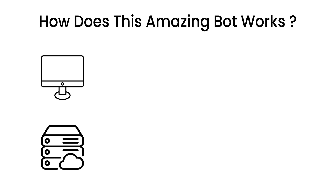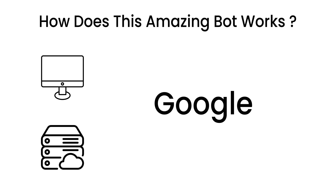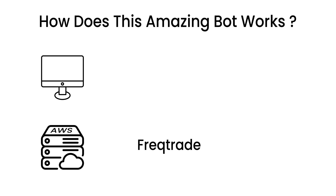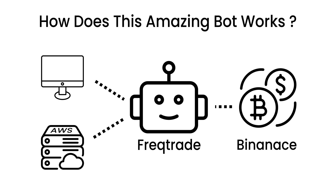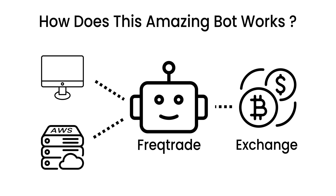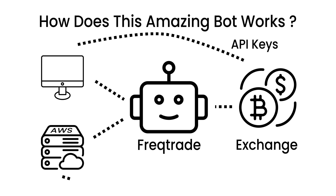Let me first explain how this amazing bot works. You have a PC or a server — any cloud server like AWS, Azure, or Google Cloud. Then you have FreqTrade, which is installed on your PC or cloud server. FreqTrade connects with exchanges such as Binance or Bybit, as long as they are supported by the CCXT library. The exchange provides API keys, you configure those in FreqTrade, and then you can communicate with the exchanges. That's the basic idea.